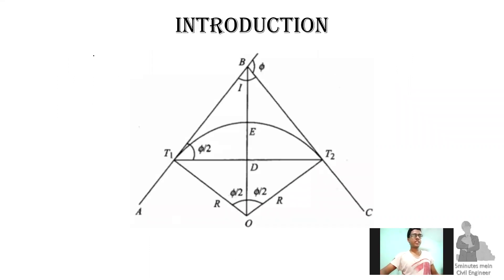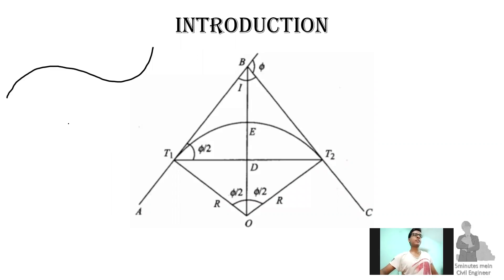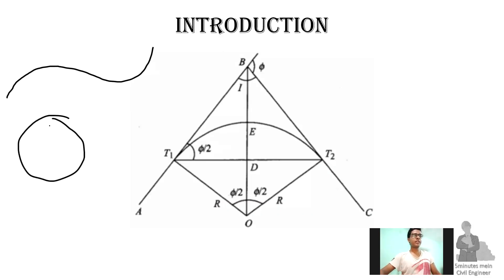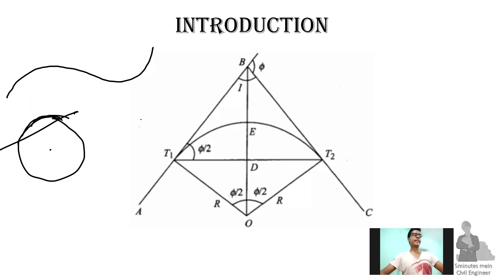First, we are going to say what is a curve. A simple circular curve is a circle — it is a single circle. The part of this circle is a simple circular curve. This is T1, E, T2 — this arc T1ET2 is a simple circular curve.